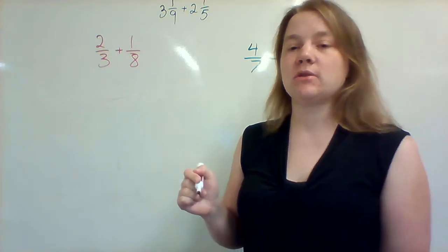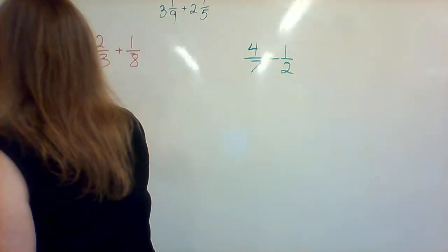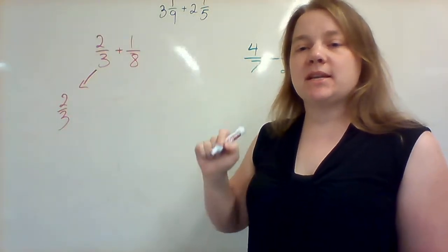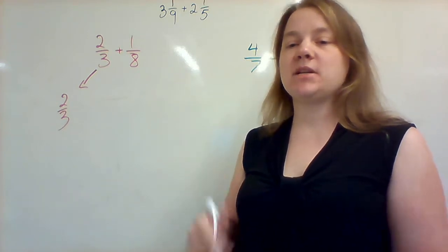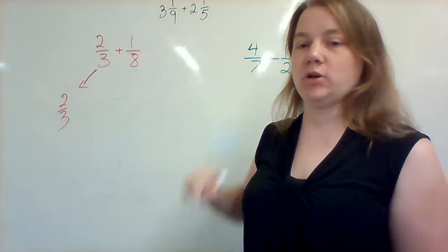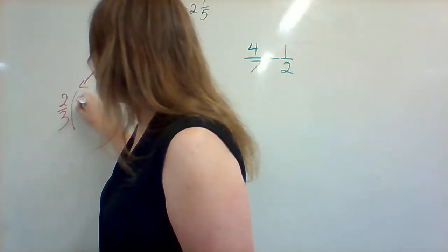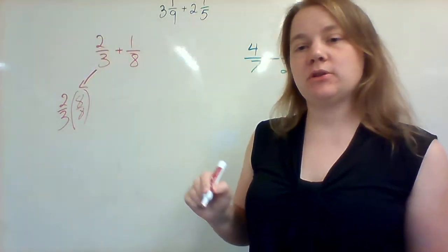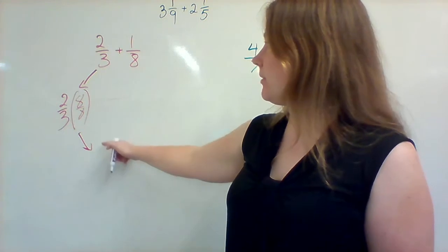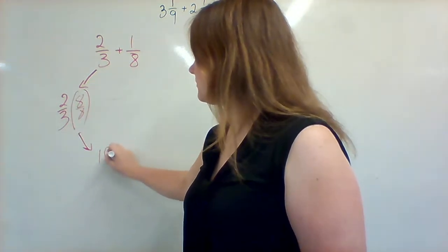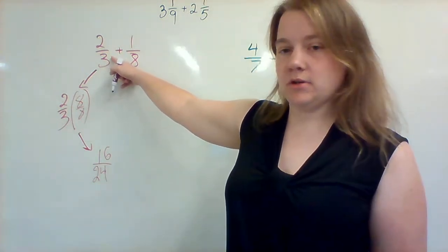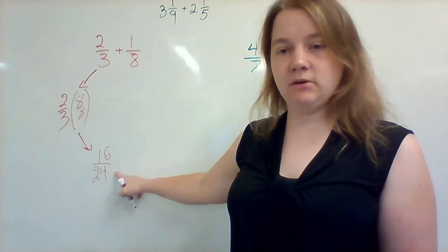I'm going to take the 2 thirds out and put it off to the side. I need to change 2 thirds so that it has a common denominator. So I'm going to take 2 thirds and I'm going to look at the denominator of the other fraction, the 8, and I'm going to multiply 2 thirds times 8 over 8. When I put that back into my problem, 2 times 8 is 16 and 3 times 8 is 24. So I've taken 2 thirds and changed it to 16 over 24.